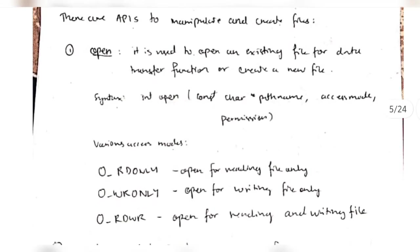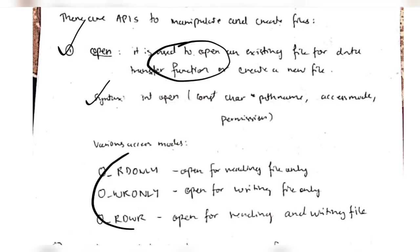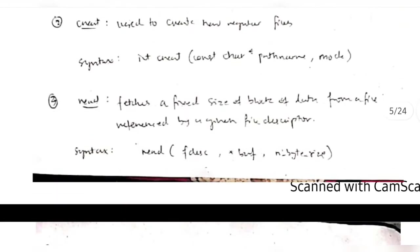For each of the functions we will be discussing the name, what its function is, the syntax, and the various modes. Next we have 'create' and this is the syntax for it - we have the path name and the mode, meaning which path name we have to create and what mode, like reading or writing.